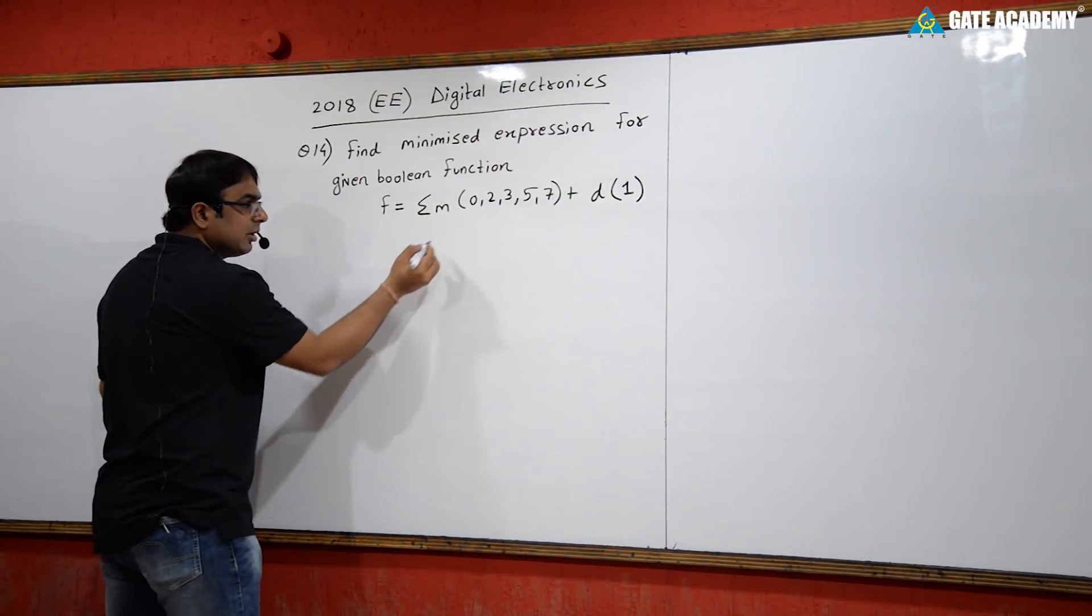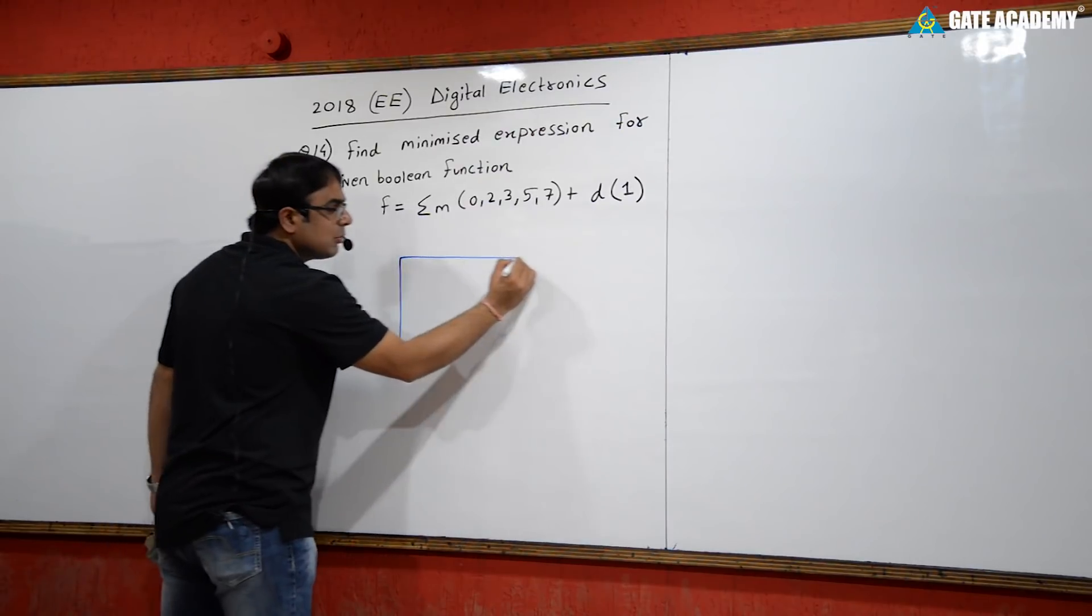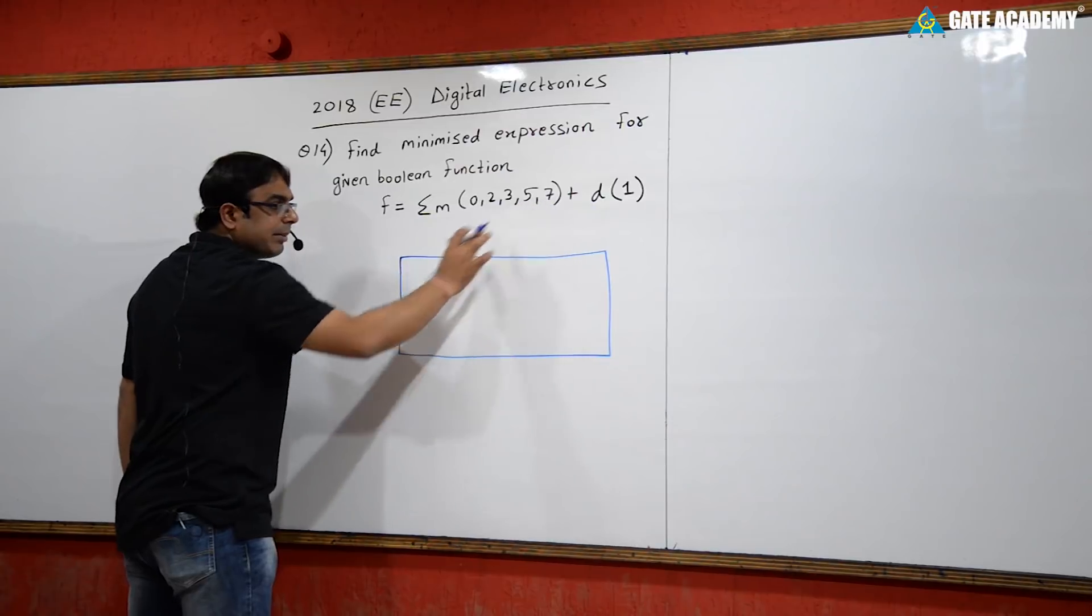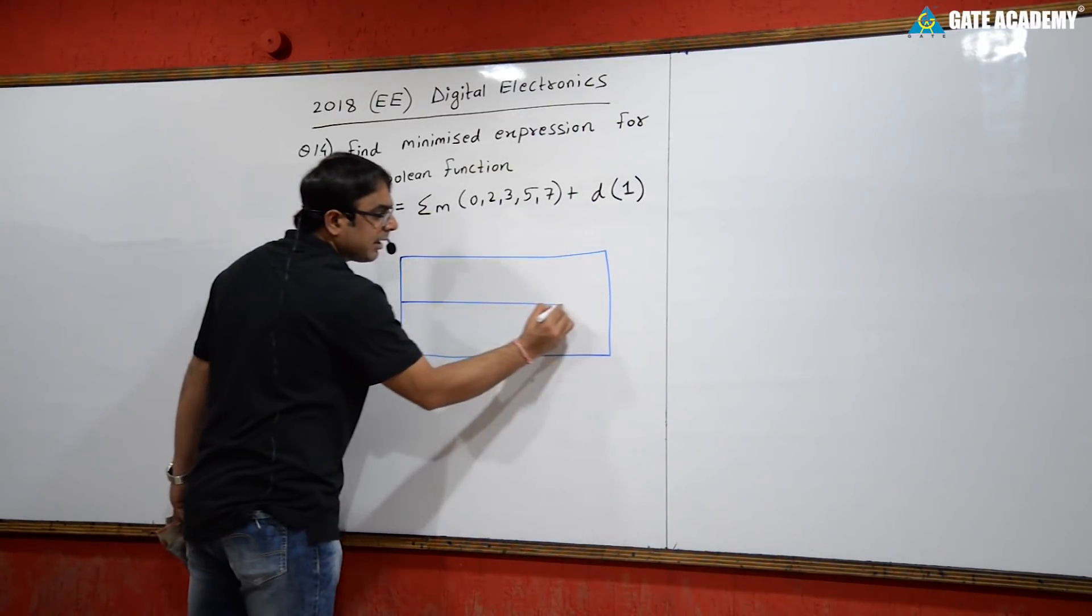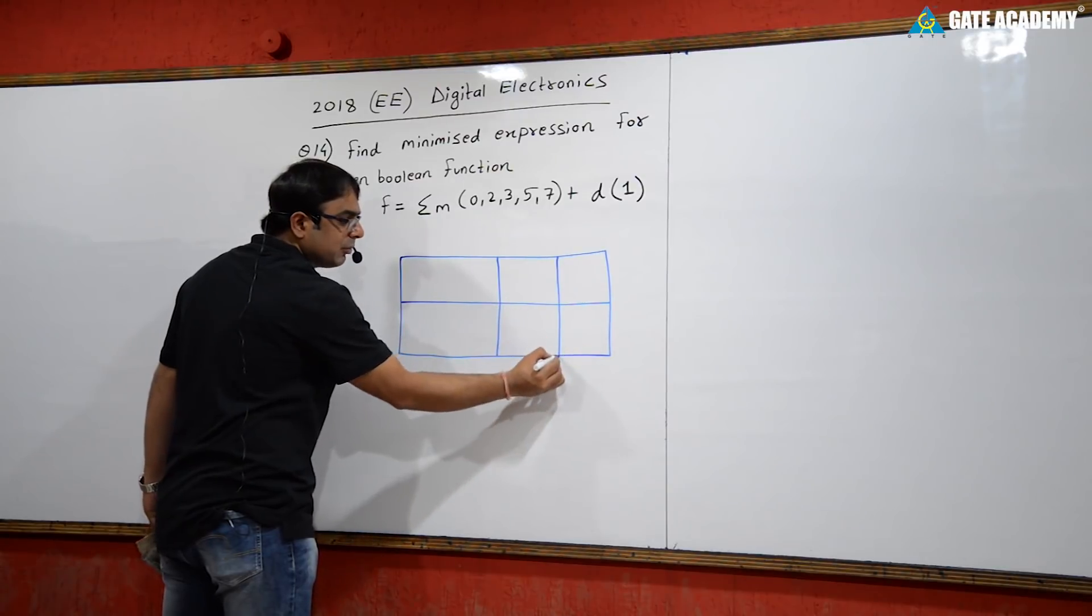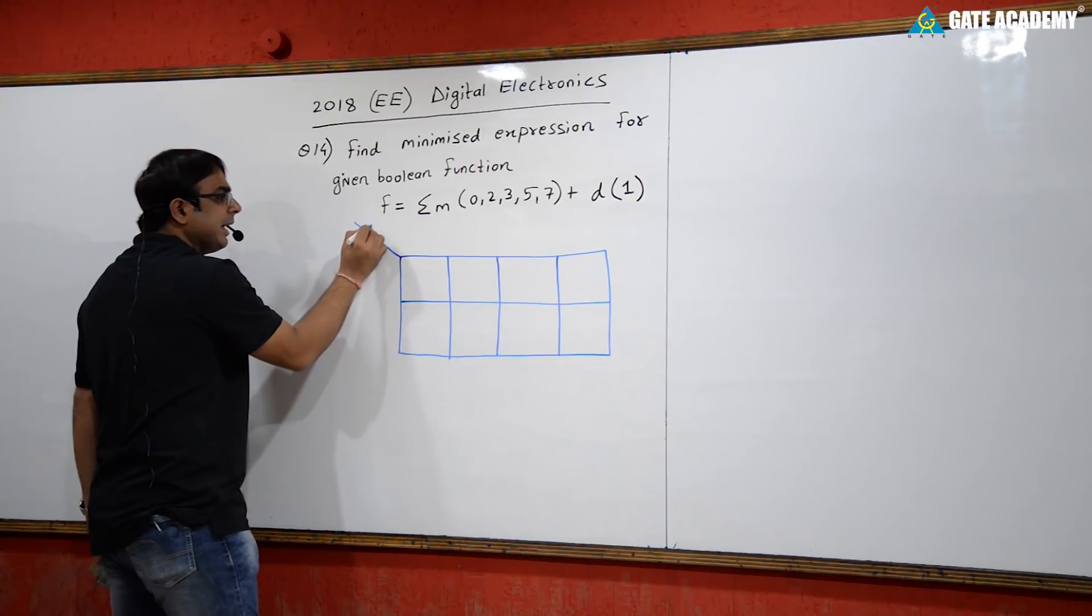To find the minimized expression, we can use a K-map. Since the maximum minterm is 7, this is a 3-variable function with variables a, b, and c. The options were given in terms of a, b, and c.